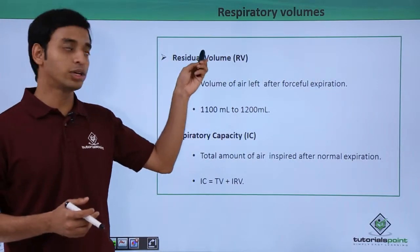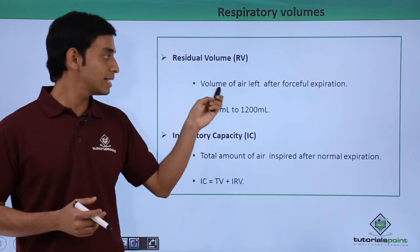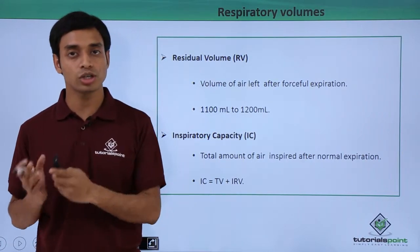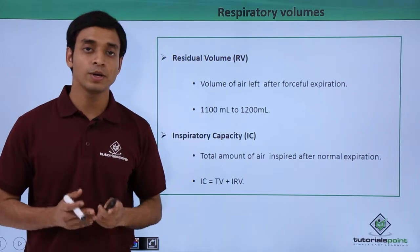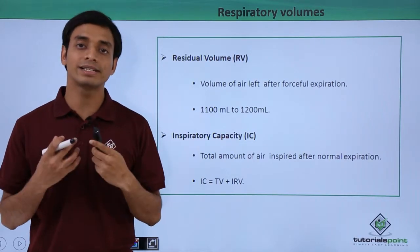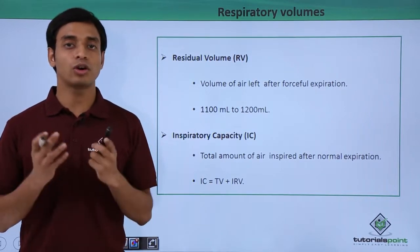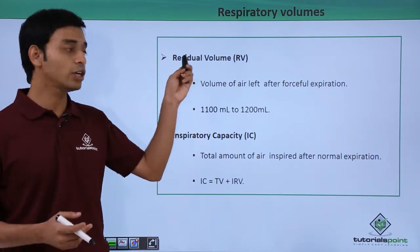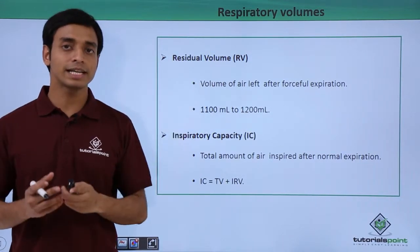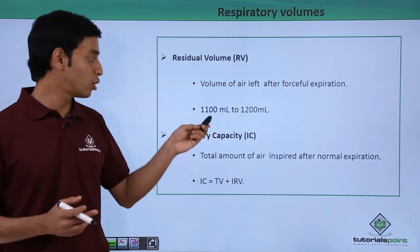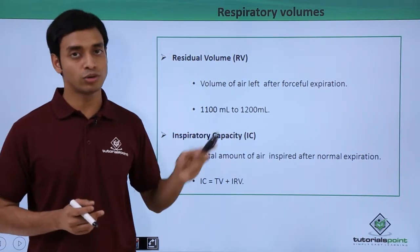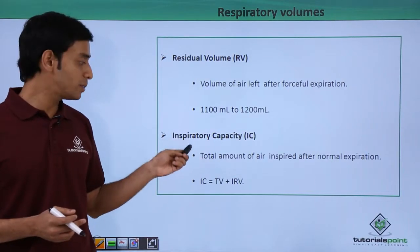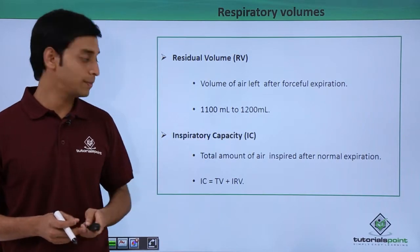The next term is known as the residual volume, or RV. This is the volume of air that is left inside the lungs after a process of forceful expiration. If we forcefully try to exhale air, the volume of air that will be left inside the lungs is known as RV or residual volume, which amounts to about 1100 milliliters to 1200 milliliters.